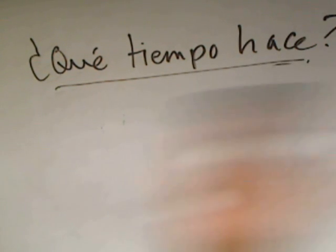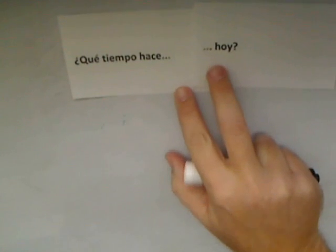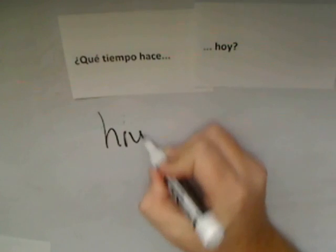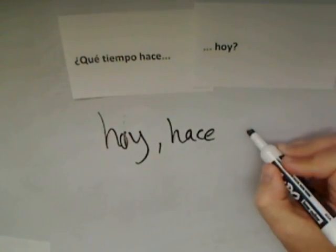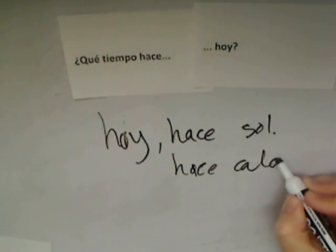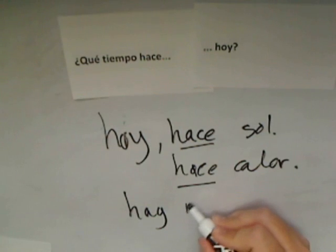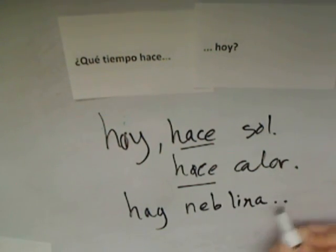Again, you might need to rewind and review some of that — that was a lot of vocabulary, a lot of different expressions. Now let's take a look at some questions. We've been dealing with the basic one: ¿Qué tiempo hace? There are add-ons we could look at. ¿Qué tiempo hace hoy? We might answer: hoy hace sol, or hoy hace calor using the hacer form. Or hay neblina if we want to use hay.